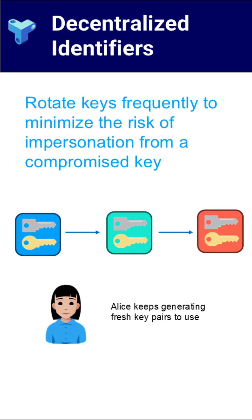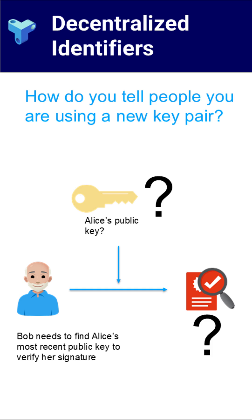This is where key rotation comes in. Key rotation is the process of replacing an old key with a new one. If a private key is compromised, you generate a new key pair, update your records, and start using the new key. But that introduces another challenge: how do people know which key is the right one? If someone has your old public key, how do they know it's no longer valid? And how do we keep track of this history in a reliable way?